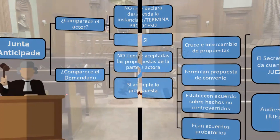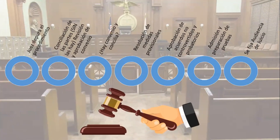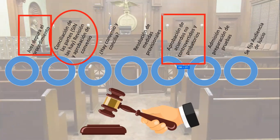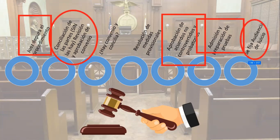Continuamos con la audiencia preliminar: vamos a depurar el proceso y procedimiento, resolvemos sobre los incidentes y excepciones procesales presentados, y verificamos el tema de la conciliación. Si las partes llegan a un acuerdo, se resuelve ahí. Si no hay acuerdo, continuamos con la resolución de medidas provisionales, los acuerdos probatorios, los acuerdos sobre hechos no controvertidos. Ofrecemos los medios de prueba, se admiten o desechan, y se fija la celebración de la audiencia de juicio.